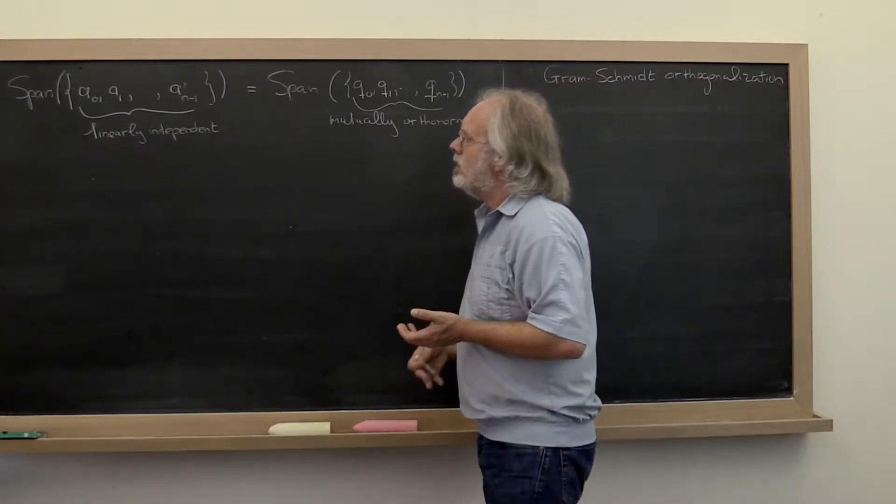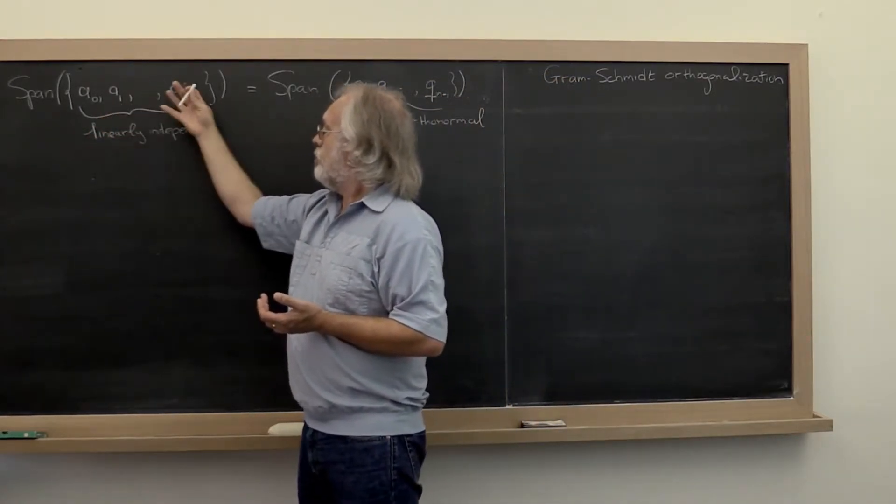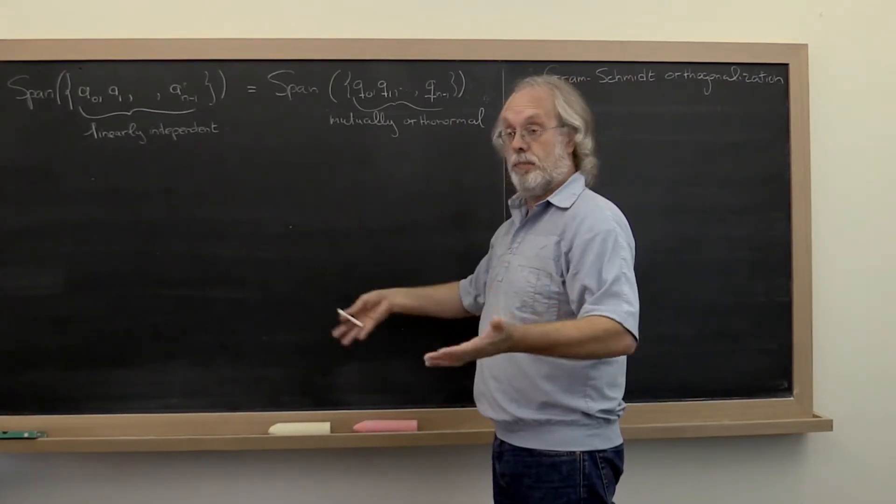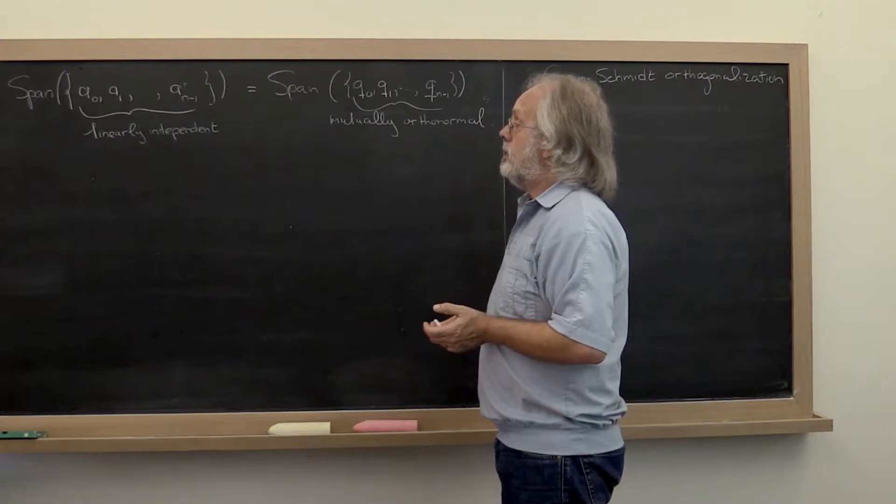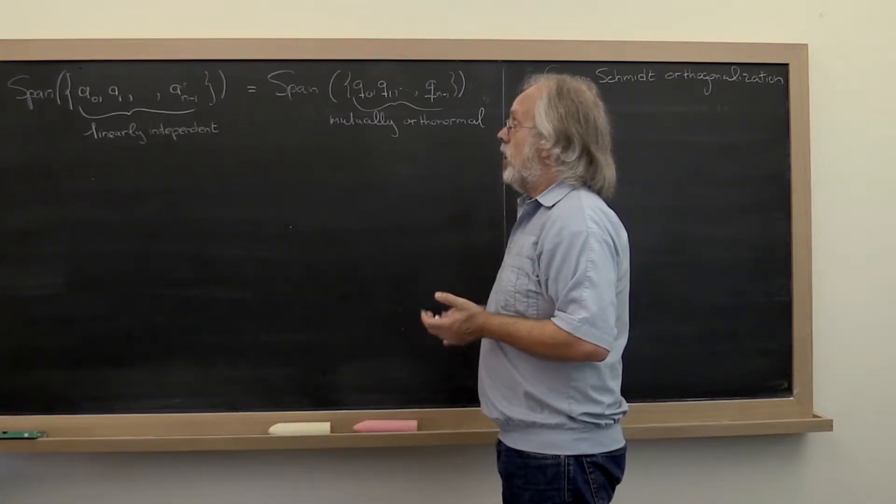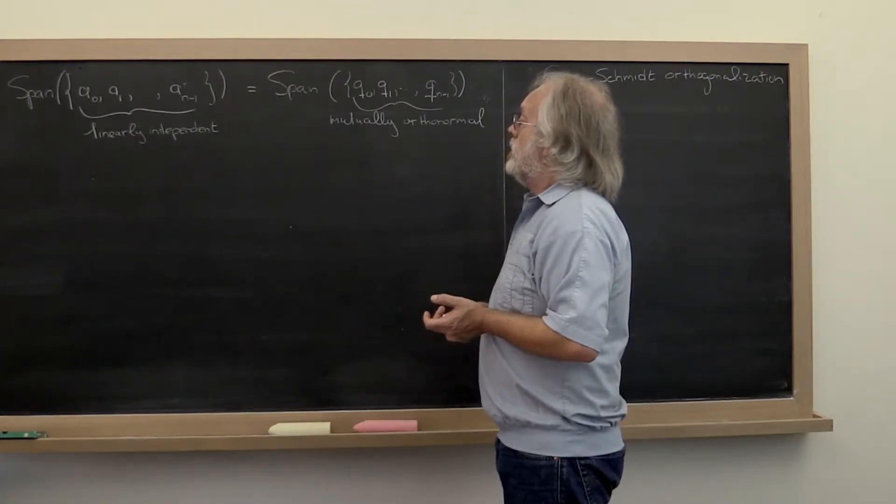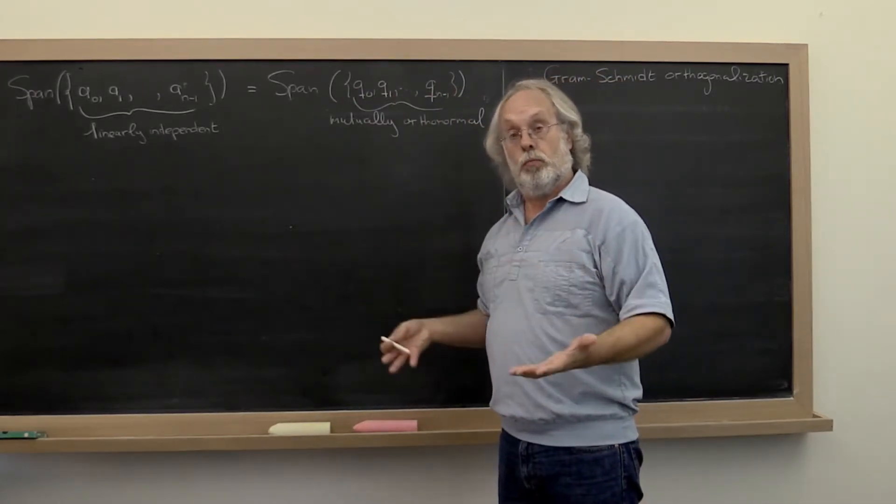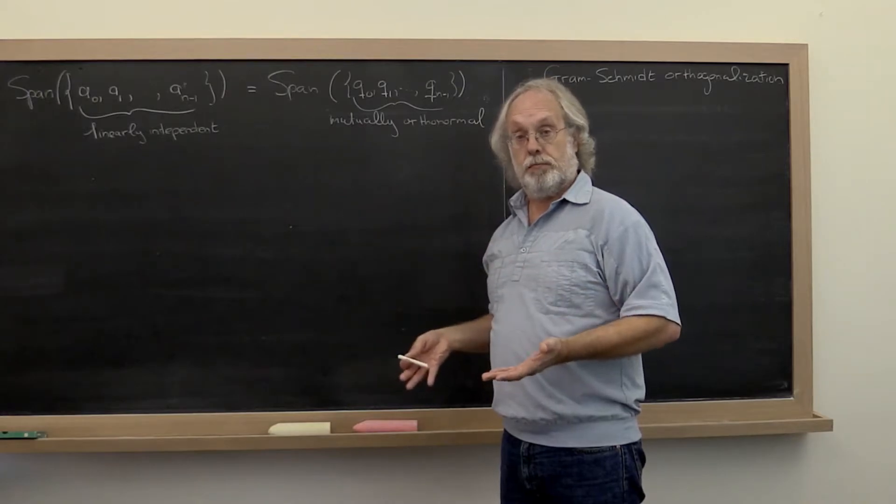What does that mean? Well, if a0 through a(n-1) form a basis for that subspace, the span of those vectors, then these vectors form an orthonormal basis for that same subspace.